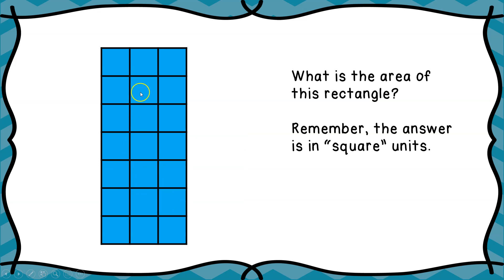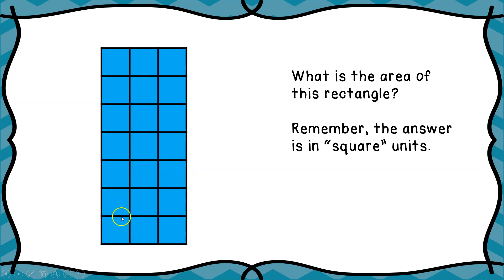Here's one more. What is the area here? You can either count all the squares, or you can use the array. We go seven across and three down — seven times three. Or we can count: one, two, three, four, five, six, seven, eight, nine, ten, eleven, twelve, thirteen, fourteen, fifteen, sixteen, seventeen, eighteen, nineteen, twenty, twenty-one. However you look at it, the area is twenty-one square units.